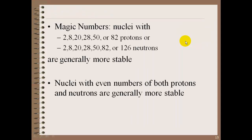Another method of prediction is magic numbers. Nuclei with 2, 8, 20, 28, 50, or 82 protons, or 2, 8, 20, 28, 50, 82, or 126 neutrons are generally more stable. This is just a pattern that they've noticed.